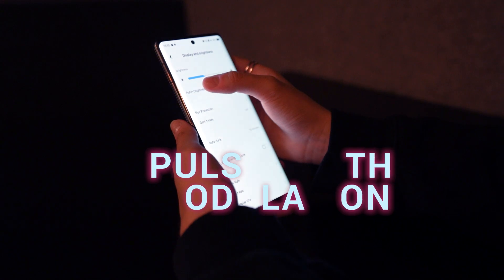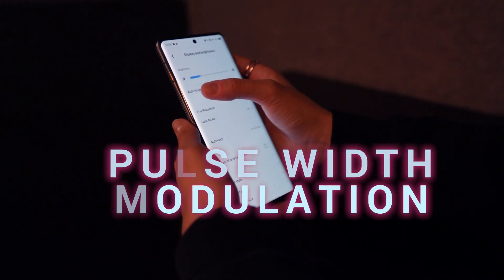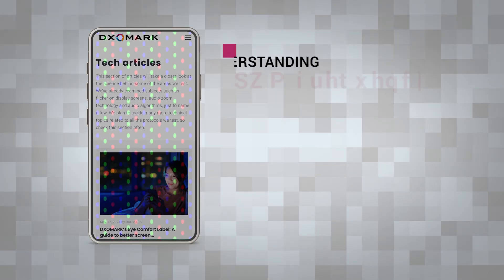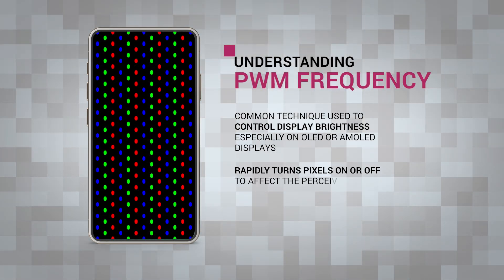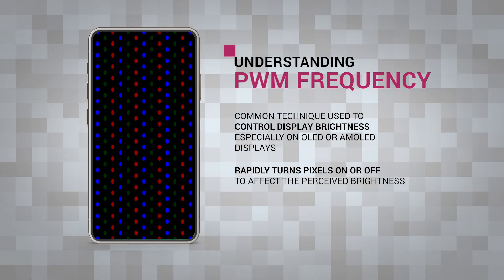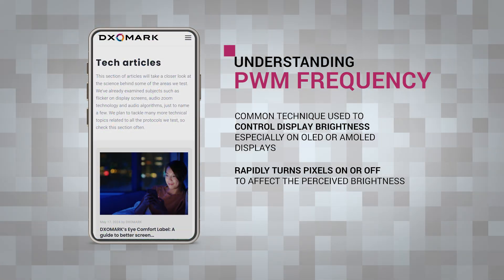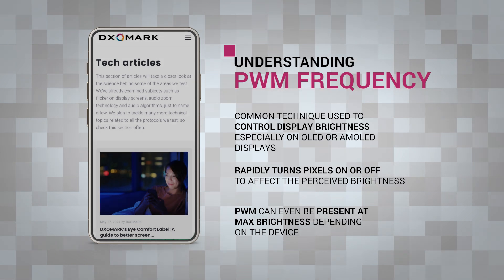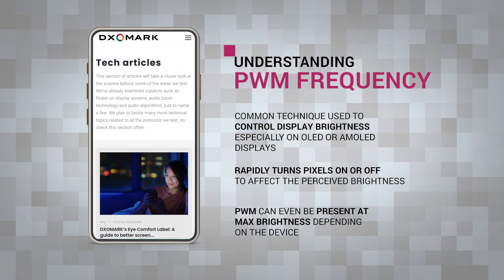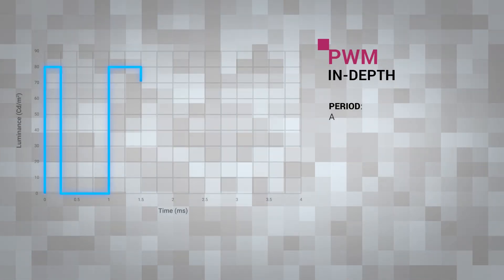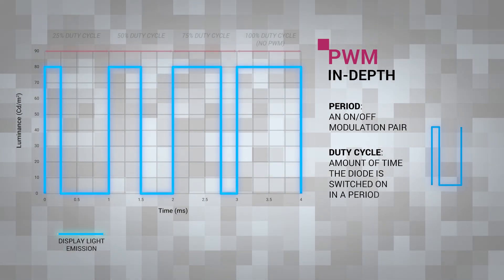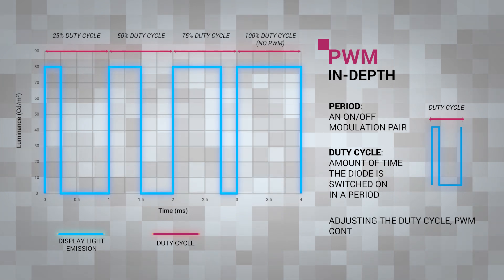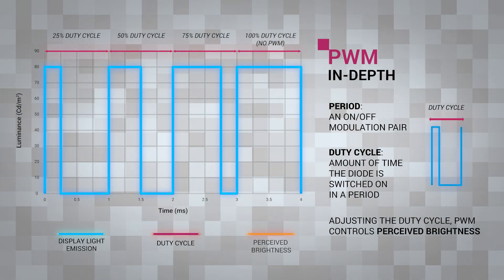A common technique for controlling brightness, which significantly affects the overall temporal light artifacts, is known as pulse width modulation. Rather than reducing the power going to the light — which can affect color and efficiency — PWM rapidly turns the light on and off. An on-off modulation pair is called a period, and the amount of time that the diode is switched on in a period is called a duty cycle. By adjusting the duty cycle, the PWM effectively controls the perceived brightness.